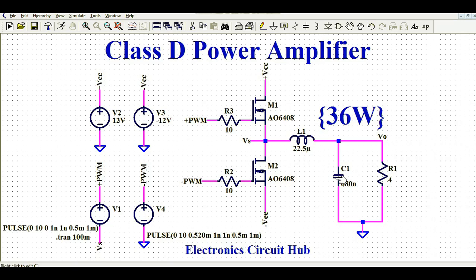The value of inductor L1 is 22.5 microhenry and capacitor C1 is 680 microfarad. L1 and C1 are chosen such that this forms a low-pass filter with a corner frequency of around 40 kilohertz, which is well above the audio frequency range of maximum 20 kilohertz, so it passes all audio frequencies. I have connected a 4-ohm load, simulating a speaker with 4-ohm impedance.